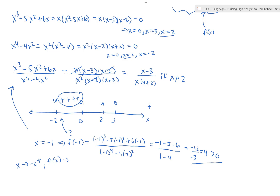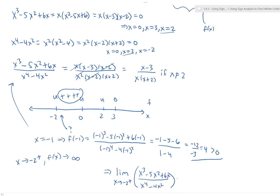Moreover, the denominator is getting extremely close to zero, so we have some value in the numerator divided by a tiny number near zero in the denominator — that entire quantity blows up. Because the function is positive, it blows up to positive infinity. Thus, the limit as x goes to negative 2 from the right of x cubed minus 5x squared plus 6x divided by x to the fourth minus 4x squared equals infinity.